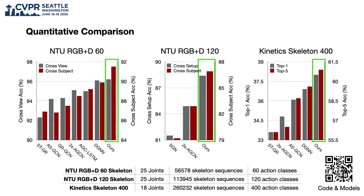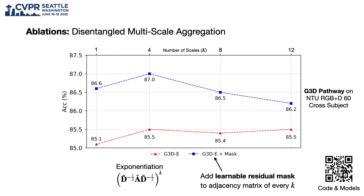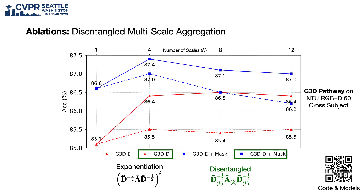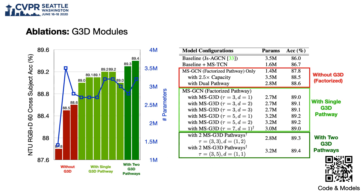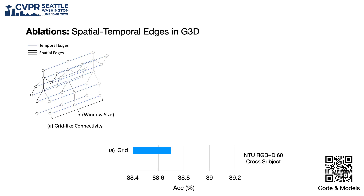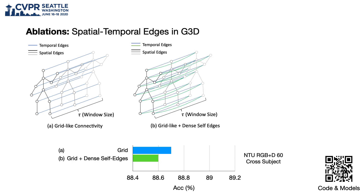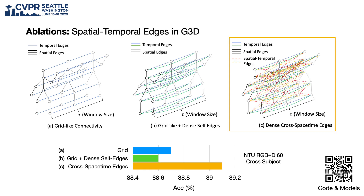We tested our method on three large-scale datasets: NTU-60, NTU-120, and Kinetics-400, and we show that our method consistently outperforms all results from last year. We also tested different numbers of scales of multi-scale graph convolutions, and we saw a consistent gain when we used our proposed disentangled multi-scale aggregation. We also incrementally built up our model from the baseline, and saw consistent gains with a similar number of parameters when we introduced the G3D pathways. We also tried different spatial-temporal connectivity patterns, and saw that edges across both space and time are necessary.